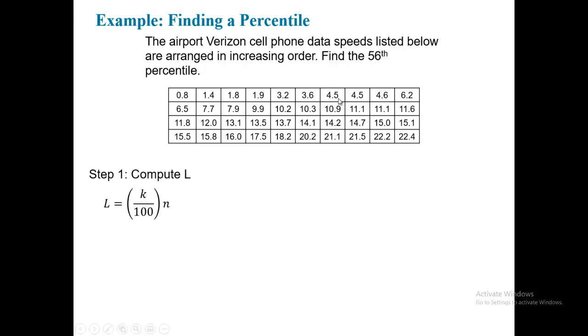We can see there are 40 observations, so N equals 40. Once we simplify, we see that L is 22.4. Next, we'll evaluate L. Since L is a decimal, we round up to the next integer, which will be 23.